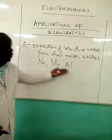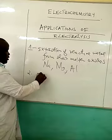Another application is electroplating of metals. Electroplating refers to coating one metal with another. The reasons why metals are electroplated are: one, to prevent corrosion; and two, to enable the article to look attractive.